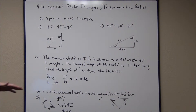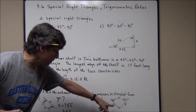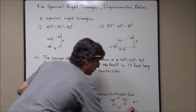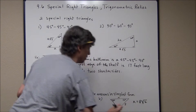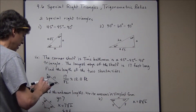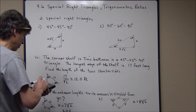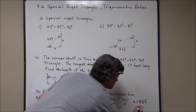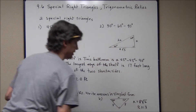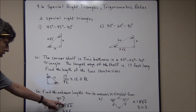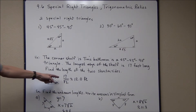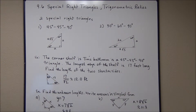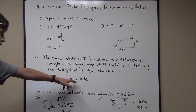In another 45-45-90, I know both legs are 8, so the hypotenuse x equals 8√2, which is approximately 11.3. The exact form 8√2 is technically the better answer because it's exact, though it's not in simplest radical form since we'd have a square root in the denominator — that's why I went ahead and changed it to a decimal.